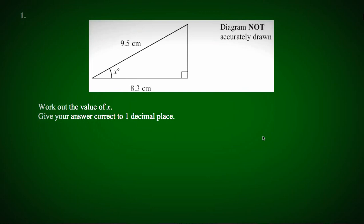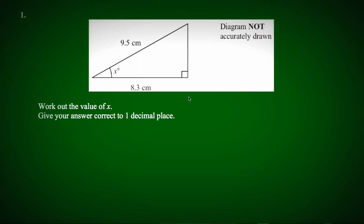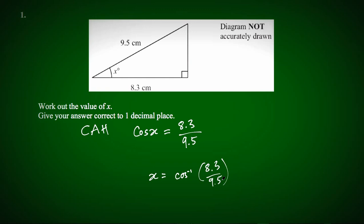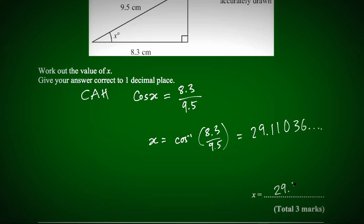In question 1 we have a right-angle triangle with two sides and an angle marked, indicating a right-angle triangle trigonometry question. Work out the value of x and give your answer correct to one decimal place. I have the angle, the hypotenuse, and the adjacent side, so I'm using cosine. cos(x) = adjacent/hypotenuse = 8.3/9.5, so x = cos⁻¹(8.3/9.5) = 29.1 degrees.